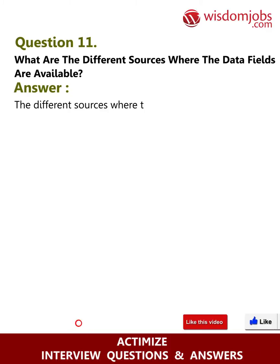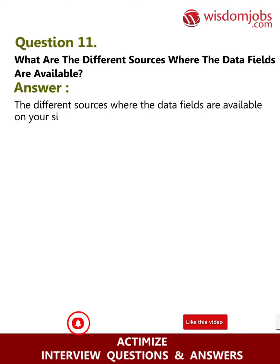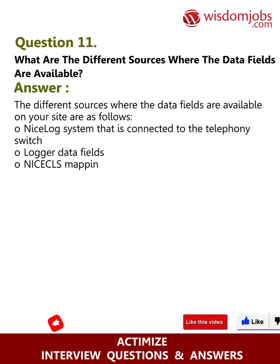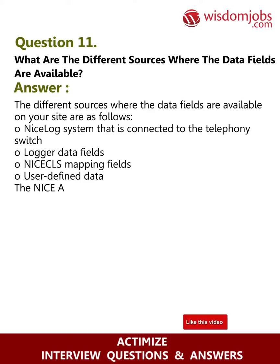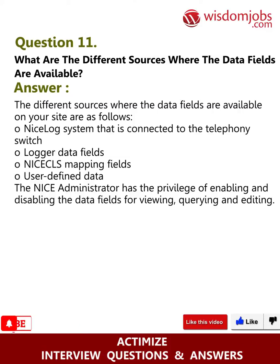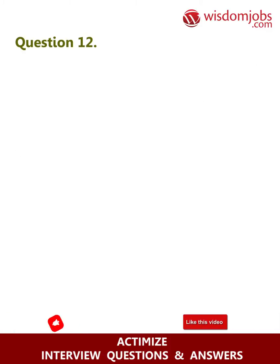Question 11: What are the different sources where the data fields are available? Answer: The different sources where data fields are available are as follows: the NICE log system connected to the telephony switch, logger data fields, NICE skills mapping fields, and user-defined data. The NICE Administrator has the privilege of enabling and disabling the data fields for viewing, querying, and editing.